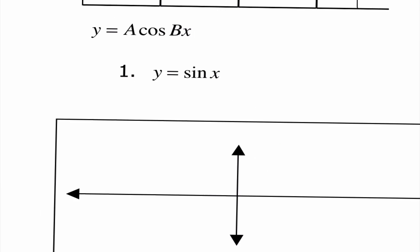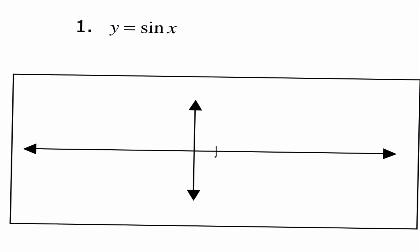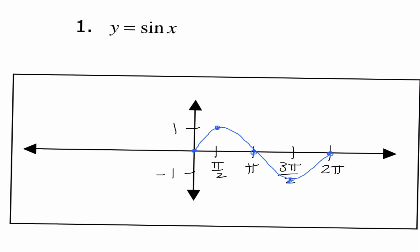We're going to go ahead and graph sine of x. I'm going to label these values pi over 2, pi, 3 pi over 2, and 2 pi, and label the y-axis with 1 and -1. Sine starts at 0, then goes to 1, back to 0, -1, and back to 0. For reference, the sine of pi over 4 is radical 2 over 2, which is approximately 0.7. Sine of pi over 6 is 1/2, and sine of pi over 3 is radical 3 over 2, which is about 0.9.